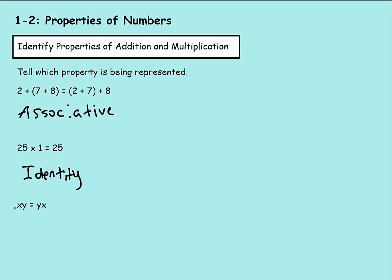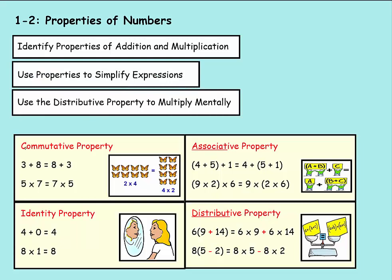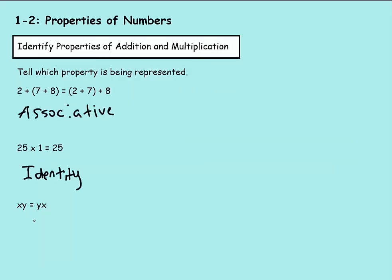This one we have variables, x and y. And whenever you see two letters or variables next to each other like this, that means they're being multiplied to each other. So we have x times y equaling y times x. So if you notice, we did x first here and then y first over here. All we did was change the order around. And if you want to check back, that would be commutative property. We switched the order of the multiplication. So we'll say commutative.